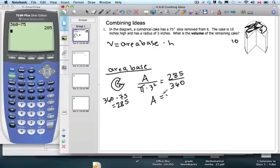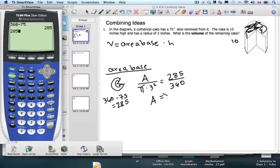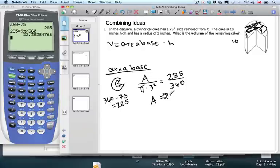So we can just find this quick by using our calculator. We have 285 times 9 pi, and I can just go ahead and divide it by 360. And I get, let's keep lots of decimal places, 22.38384. That's the area of our base.